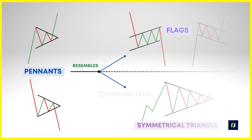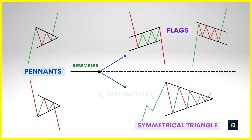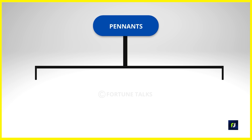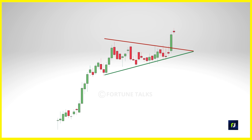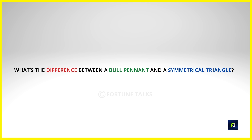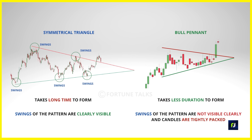Pennants are a class of chart patterns that closely resemble flag patterns and symmetrical triangle patterns in how they form and give breakouts. If you consider a pennant and flag as two brothers, the pennant is the more aggressive brother due to the explosive breakouts it provides and the reward-for-risk it generates. There are two types: bullish pennants and bearish pennants. The bull pennant forms a triangle during the pullback, consisting of two parts: the impulse move which forms the leg or pole, and the correction move from the pullback.